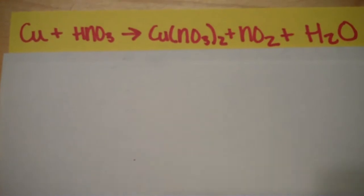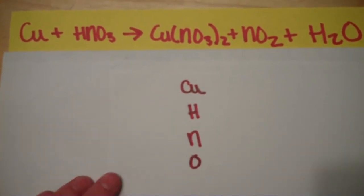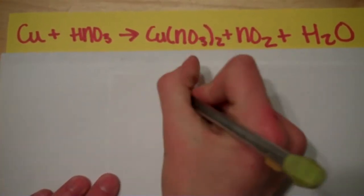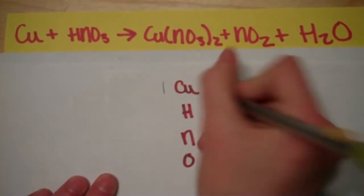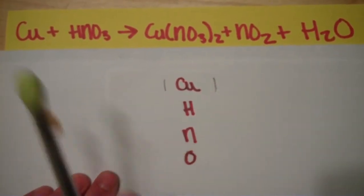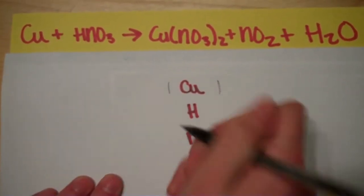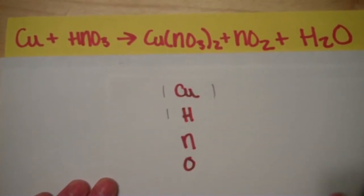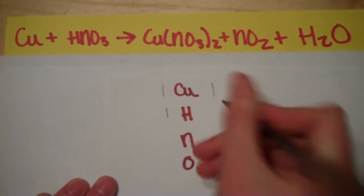Now first, to balance the equation, you have to figure out how many of each element are on each side. There's one copper on this side and one on this side. And then there's one hydrogen and two on this side because it's H2.